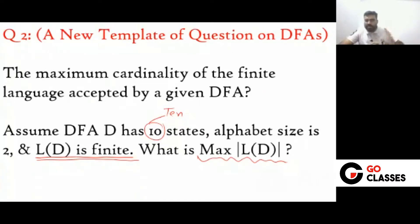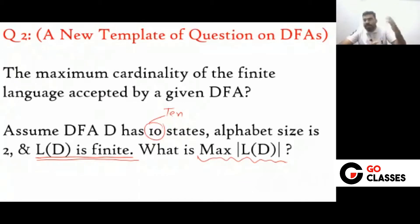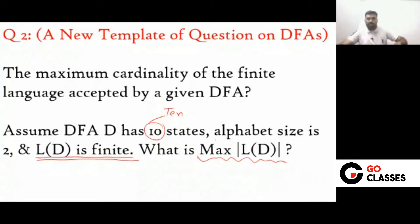Did you understand the question clearly? This is a new template of question. You have a DFA whose language is finite. I am asking: what is the maximum cardinality of the language? I am not asking the largest length string — I am asking maximum how many strings can be there. We want to accept as many strings as possible.